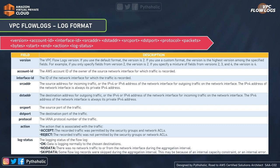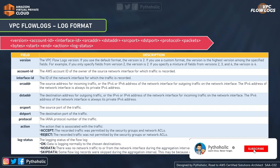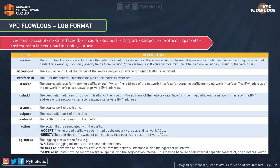Next is account ID — the AWS account ID of the owner of the source network interface for which the traffic is recorded. Then interface ID — every network interface has its own interface ID, which is also recorded as part of the traffic. Source address (srcaddr) is the source address for incoming traffic — your private IPv4 address. Destination address (dstaddr) is the destination address for outgoing traffic, also a private IPv4 address. Then source port and destination port of the traffic.